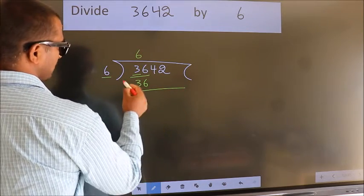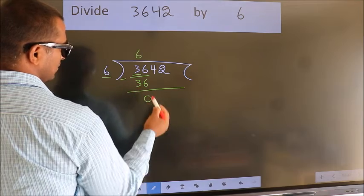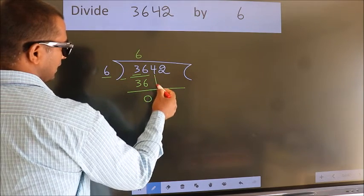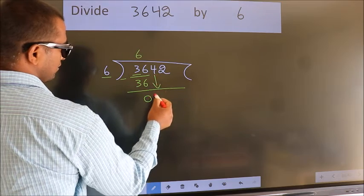Now we should subtract. We get 0. After this, bring down the beside number. So, 4 down.